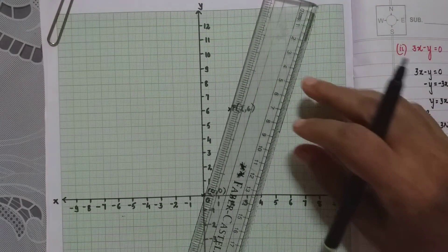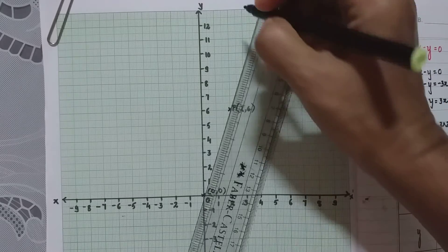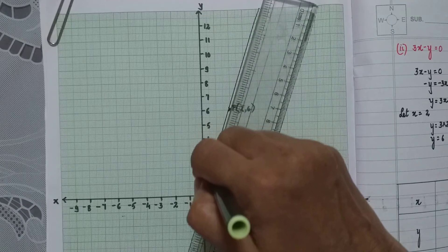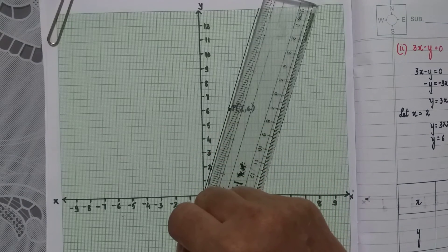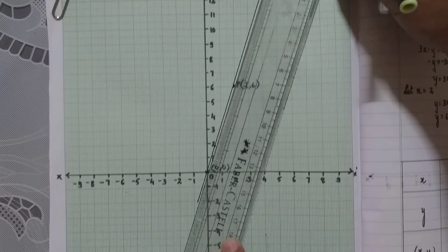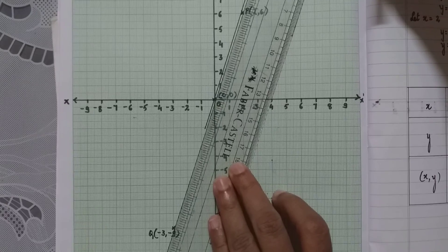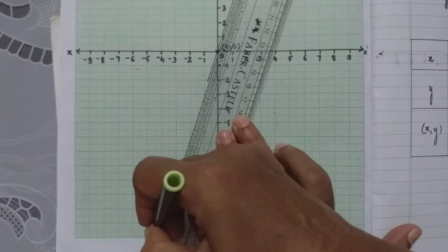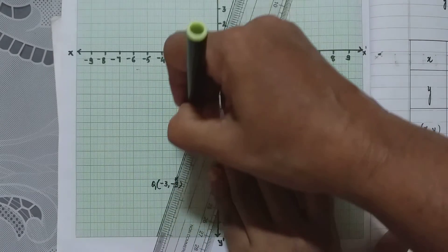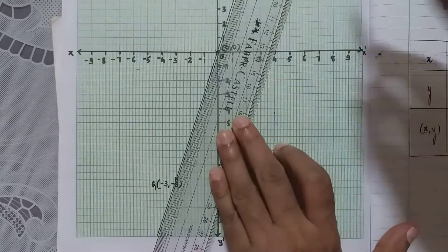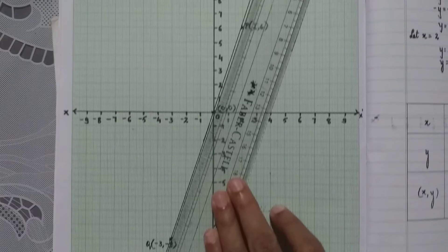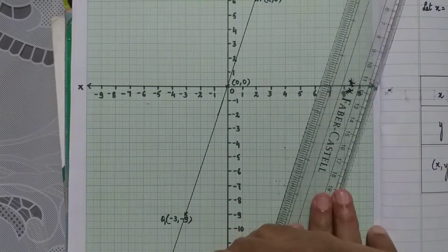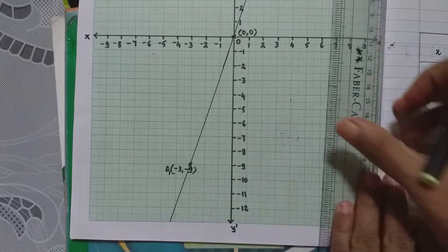So I keep the scale here passing through these three points and draw the line. So you see here when I am drawing the line, I draw from one end of the graph paper and continue drawing till the other end of the graph paper. So the line has passed from one end of the graph paper to the other end.